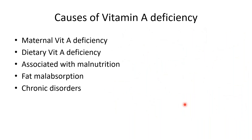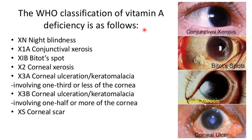Vitamin A deficiency in children can be due to maternal vitamin A deficiency, dietary deficiency in the child, associated protein-energy malnutrition, or fat malabsorption disorders like cystic fibrosis, and some chronic disorders.